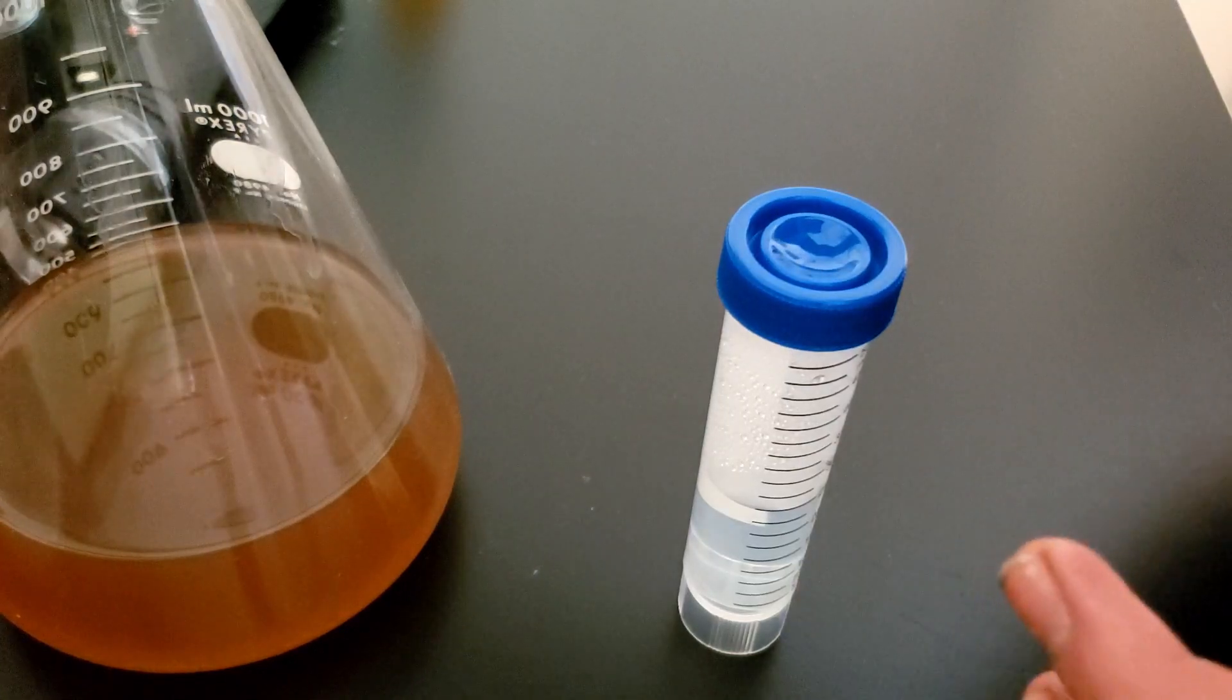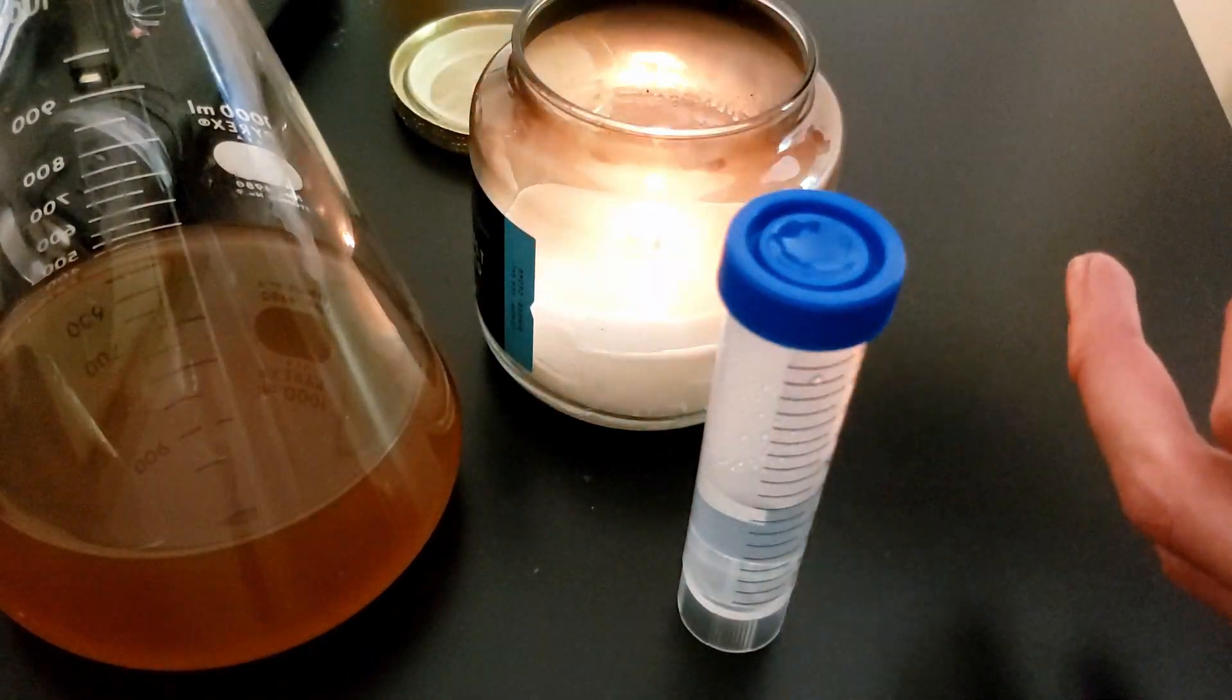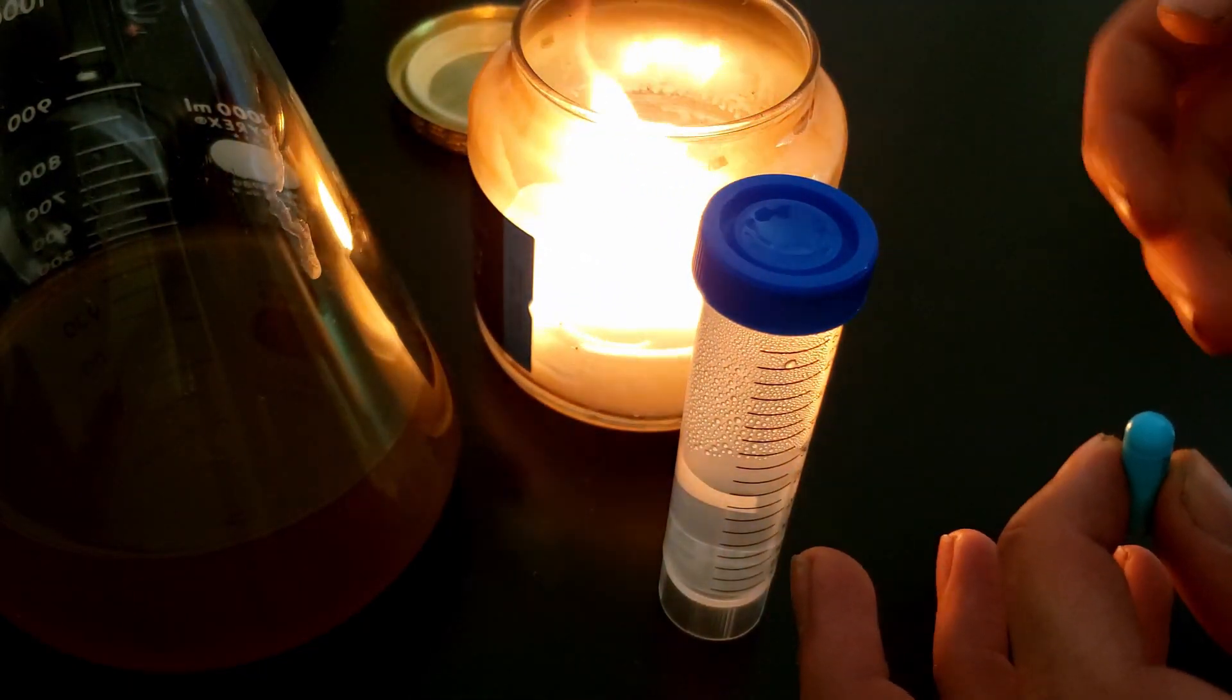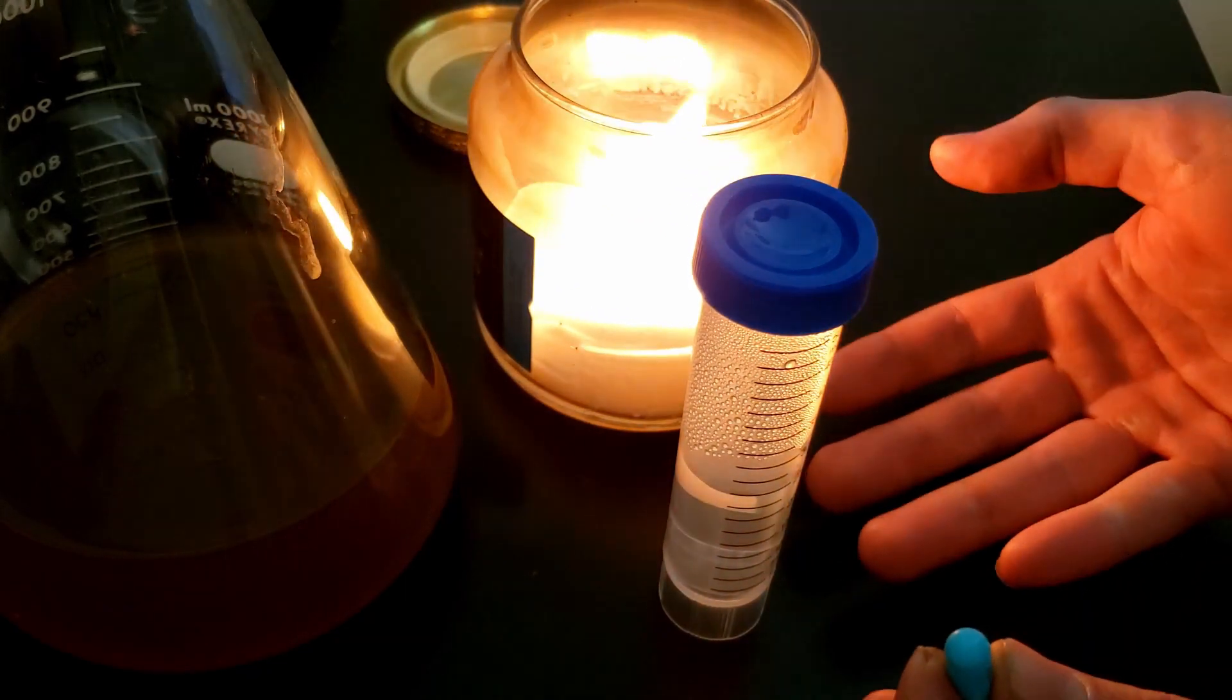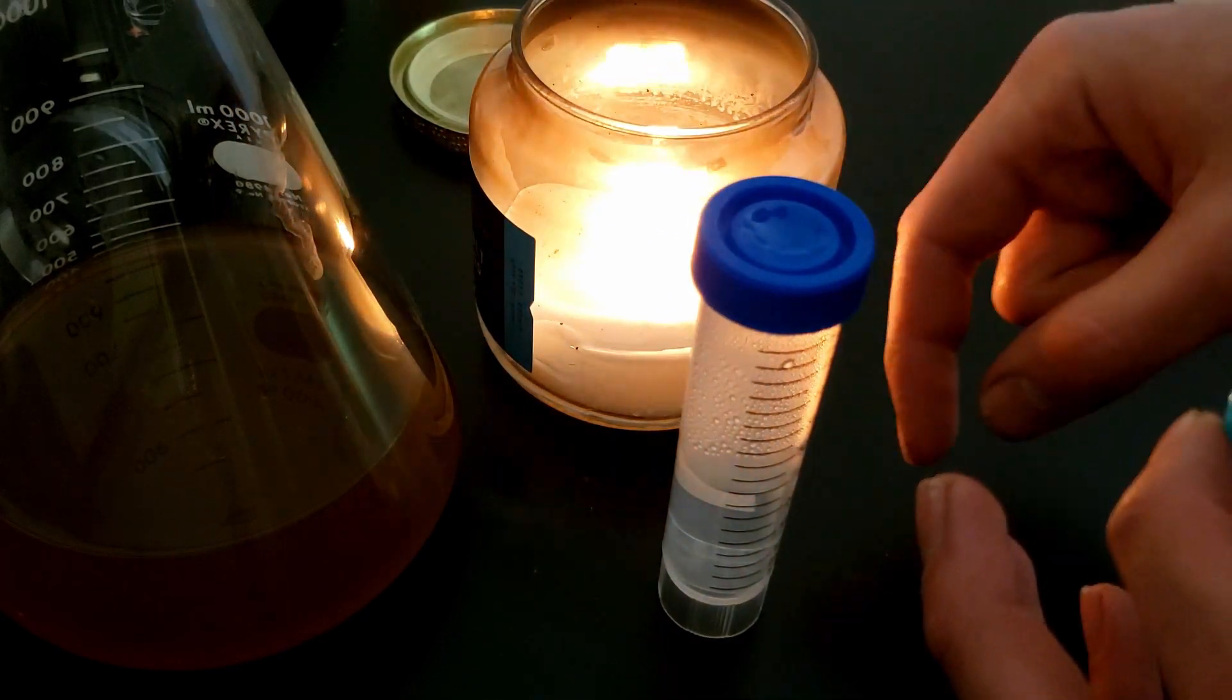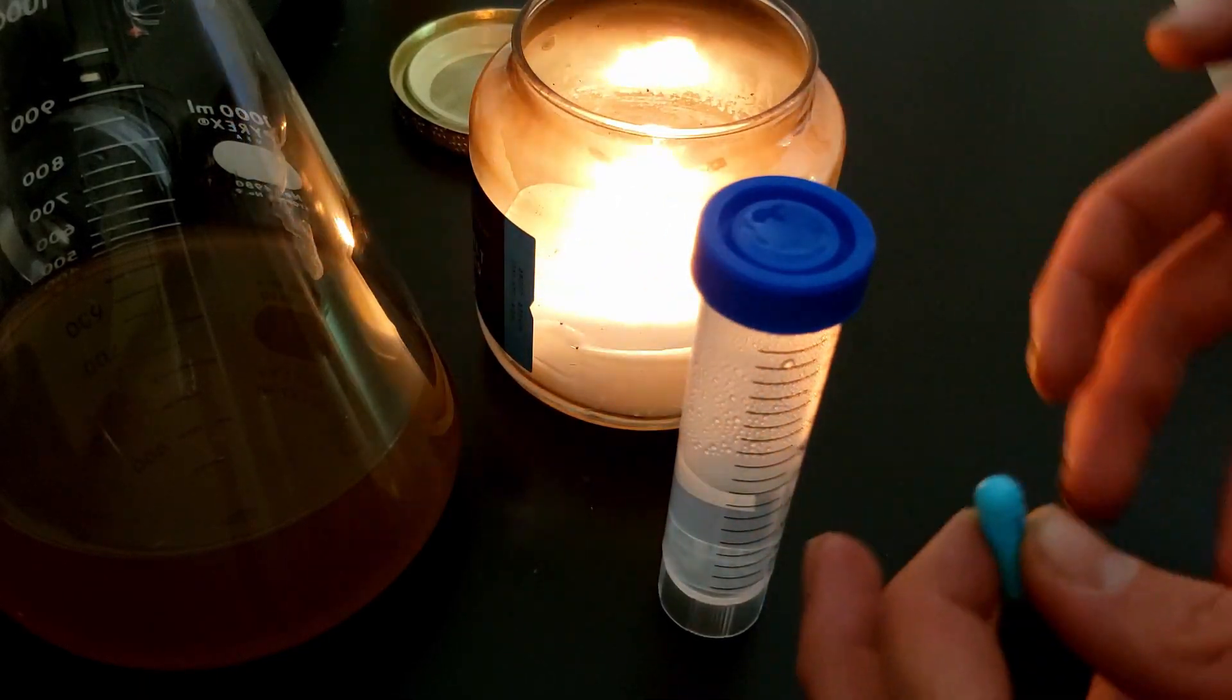So the other thing I want to do is work under flame. Working under flame basically means you have a candle or an alcohol lamp next to wherever you're working, and what this does is it creates an updraft of air. So it's not burning the bacteria that might fall in or the spores that might fall in, but it's creating this updraft so rather than air being pushed downward and particles falling into your solutions, you're pulling the air upward so it's less likely that things will fall in.